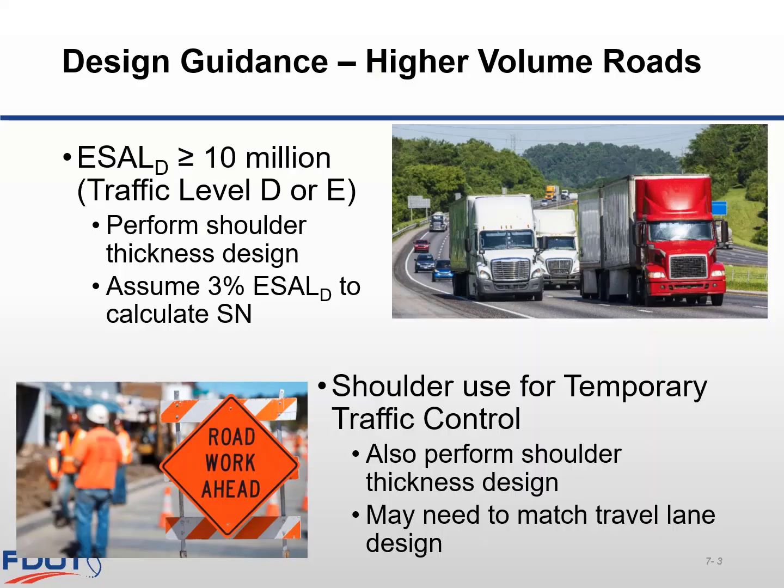On higher-volume type roadways, which are traffic levels D or E, a shoulder thickness design should be performed using 3% of the design ESAL to calculate the required structural number. The 3% is an estimate of the number of trucks that will be riding or parking on the shoulder over the design life of the pavement.